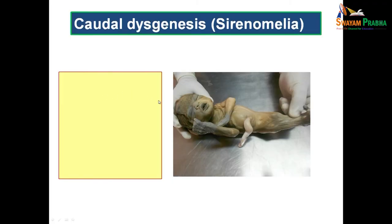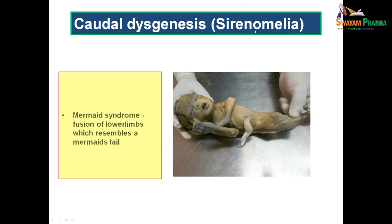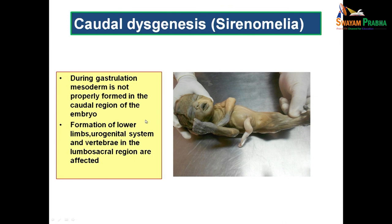Applied aspects: caudal dysgenesis or sirenomelia is otherwise known as mermaid syndrome because the fusion of the lower limbs resembles a mermaid's tail. The reason is that the mesoderm is not properly formed in the caudal region of the embryo during gastrulation. As a result, there is improper formation of lower limbs, the urogenital system, and vertebrae in the lumbosacral region — all affected when gastrulation does not occur properly in the caudal region.